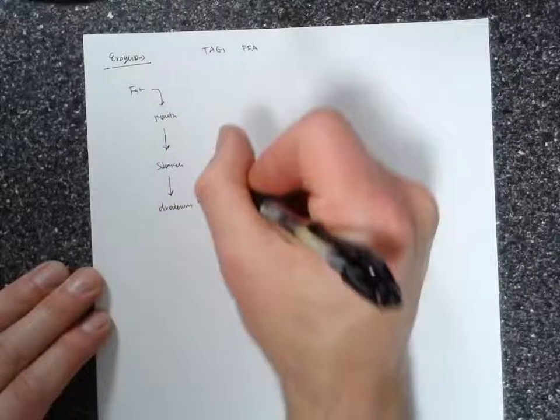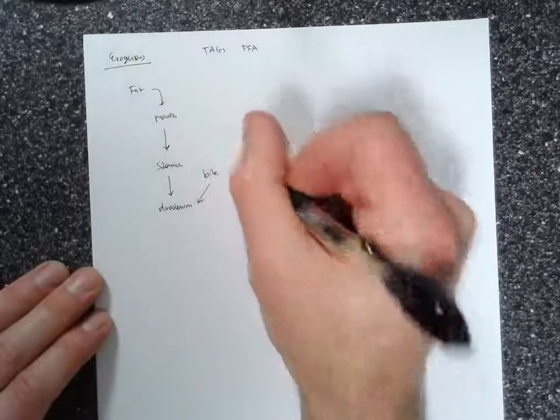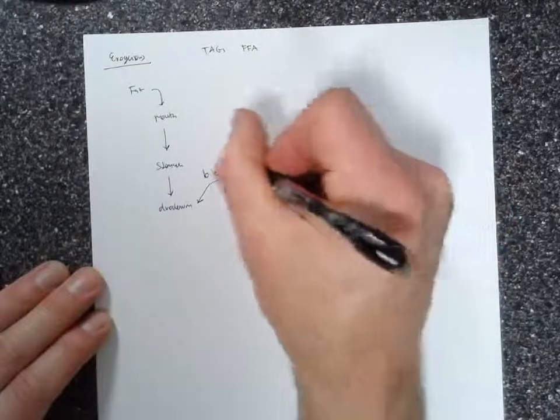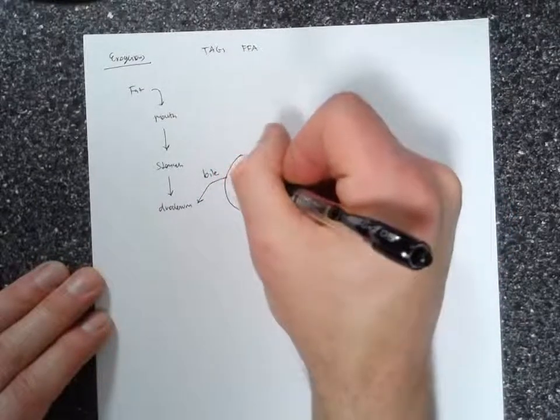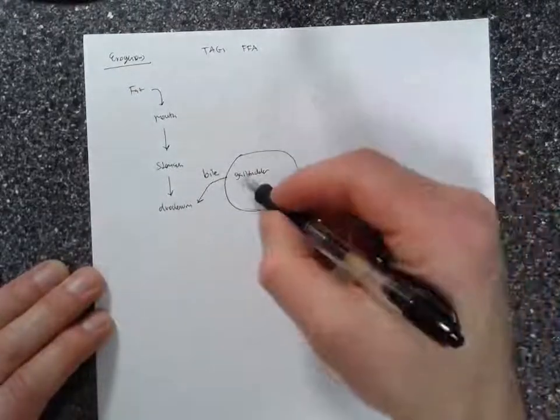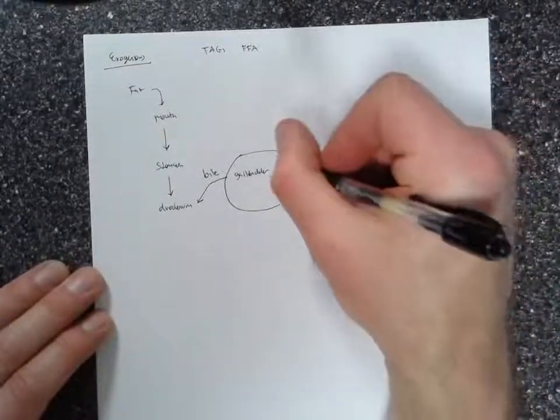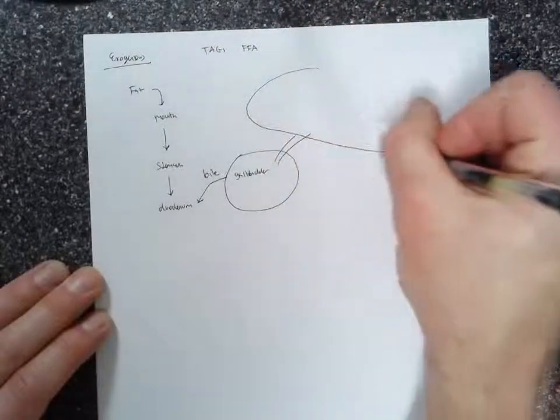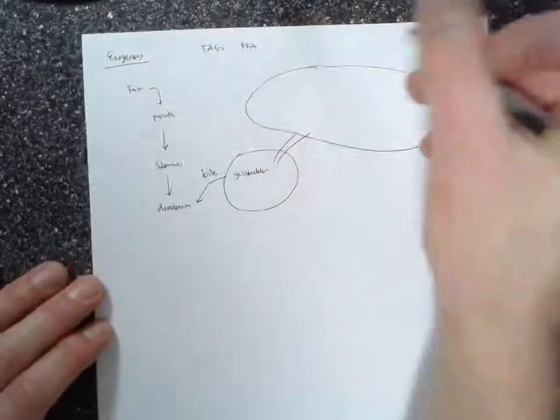In the duodenum, bile from the gallbladder is added in. And bile from the gallbladder originally comes from the liver. So I'm going to draw the liver up here. And this is not to scale.